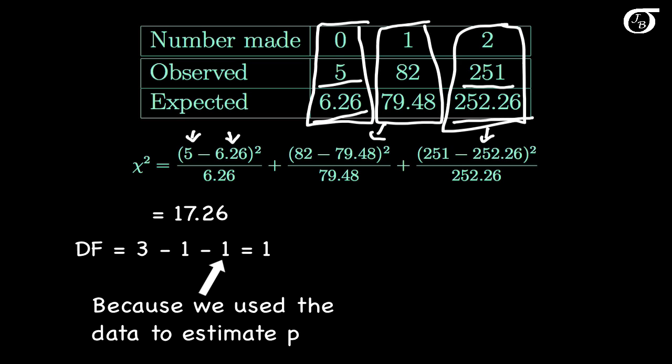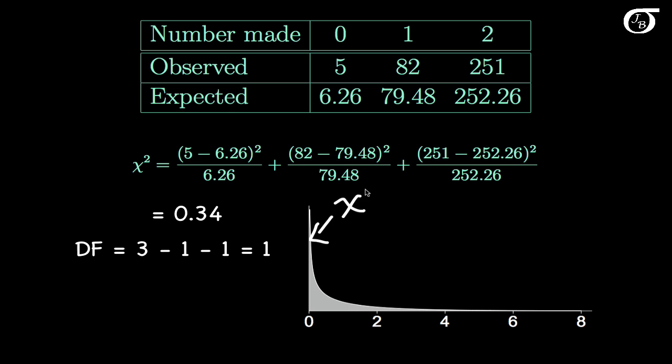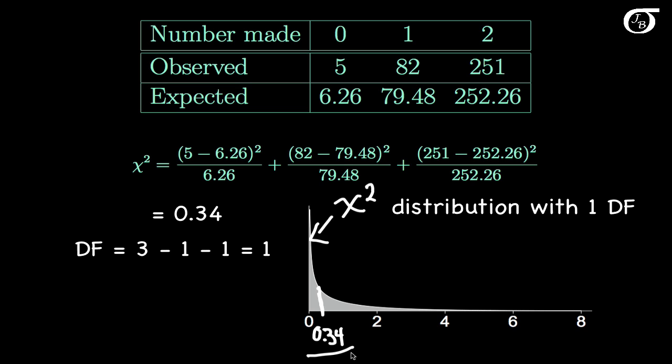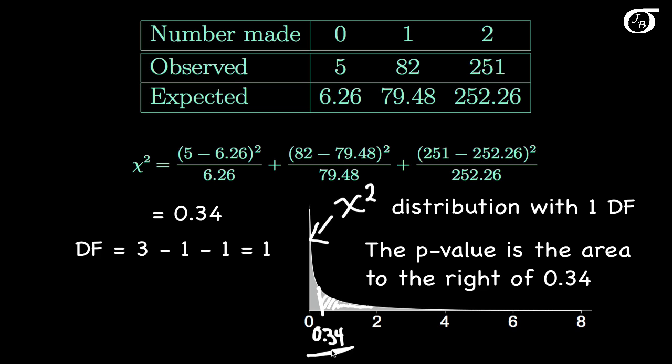Plotting a chi-square distribution with 1 degree of freedom, the observed value of our test statistic is 0.34. The larger the value, the greater the evidence against the null hypothesis, and the p-value is the area under the curve to the right of 0.34 — the probability of getting this value or something even larger if the null hypothesis were true. Using software, the p-value is approximately 0.56.